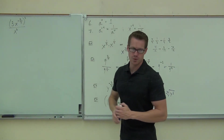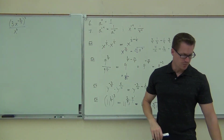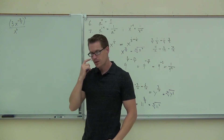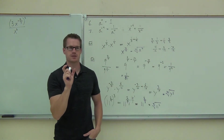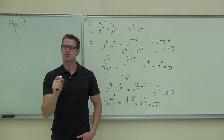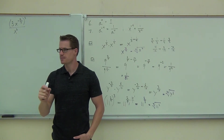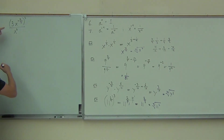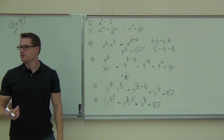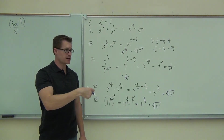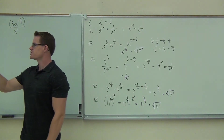Going back to your rules, I want you to look at rule number three. Rule number three says if I have some factors being multiplied together inside parentheses and it's being raised to an exponent, each one of those factors gets raised to that exponent. What I have here is a product that's three times x to the negative two-thirds. Since three is a factor and x to the negative two-thirds is a factor, each gets raised to that power.